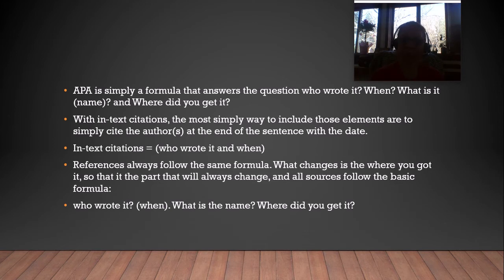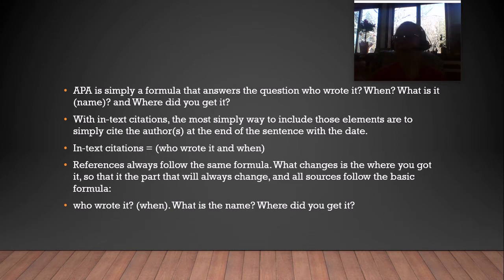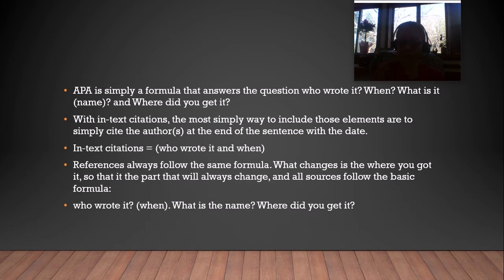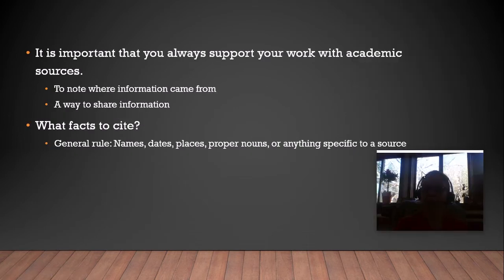When it comes to references, we're always going to follow that same formula — who wrote it, when did they write it, what is it, and where did you get it from. For the most part, what changes is where you got your source from. Whether it's a webpage, journal article, encyclopedia, podcast, or YouTube video, you're always going to have the author's name first, then the date, then the name of the source, and then where you got it from.